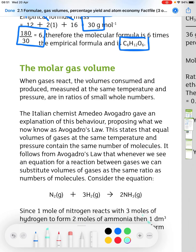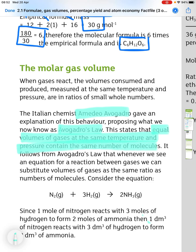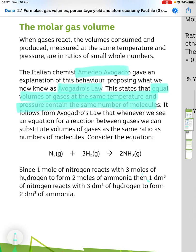Now looking at molar gas volumes. When gases react, the volumes consumed and produced, measured at the same temperature and pressure, are in ratios of small whole numbers. The Italian chemist Amadeo Avogadro gave an explanation of this behavior, proposing what we now know as Avogadro's Law. This states that equal volumes of gases at the same temperature and pressure contain the same number of molecules.